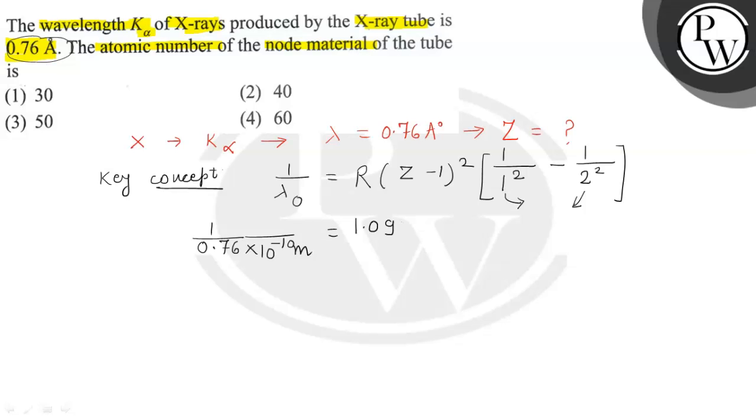Multiplied by Z minus 1 whole square. And inside the bracket we get 1 minus 1 by 4. When we solve this bracket, its value is equal to 3 by 4.